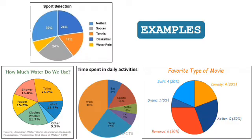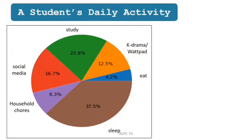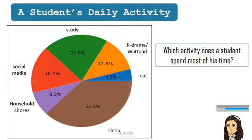Let's analyze this sample pie graph about a student's daily activity and answer the questions later. Which activity does a student spend most of his time? The student spends most of his time in sleeping with 37.5%.